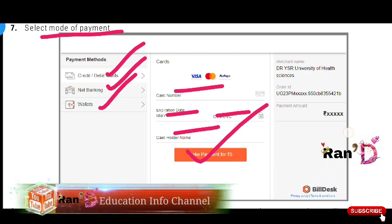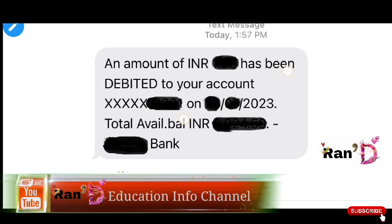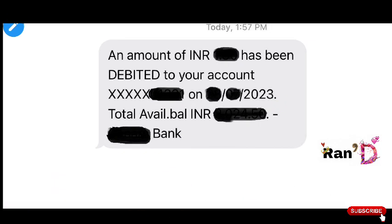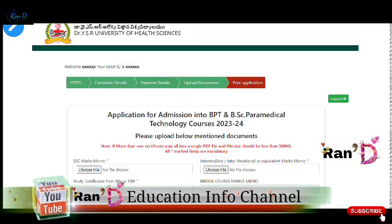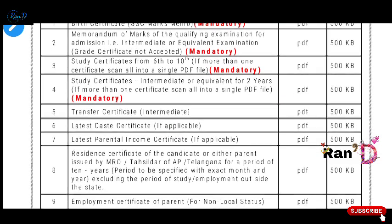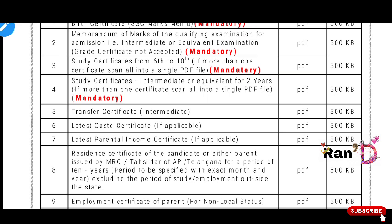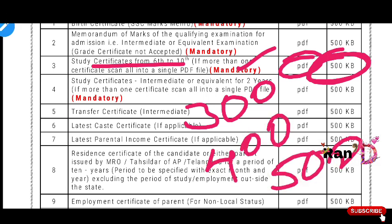After payment, take a screenshot for future reference. You can see your login details and the mandate certificates required. Documents include certificates from 6th class to 10th class. Make sure all documents are converted to PDF format. The file size should be around 500 KB, 300 KB, or 400 KB — keep them within the required limit.